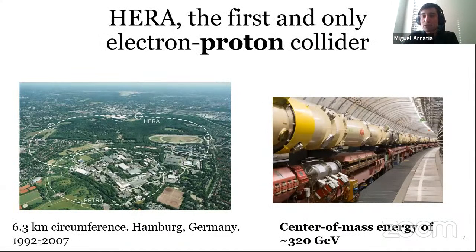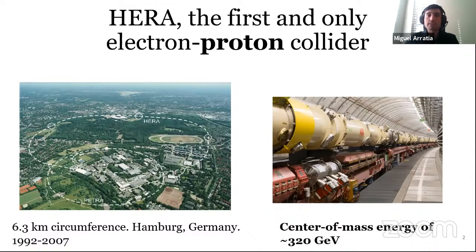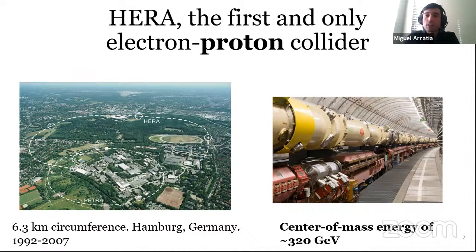Thank you for the opportunity to present today. Today I am going to discuss prospects of future measurements at the electron ion collider, centered around the goal of taking tomographic images of the proton. But first, before talking about that, let me tell you that our modern view of the proton really started after the experiments that were done at HERA, which is an accelerator that ran until 2007, just before the LHC started, in Hamburg. It was the first and only electron-proton collider — in a sense, it was also an electron ion collider, where the ion was a hydrogen ion — and it had a center of mass energy of about 320 GeV.